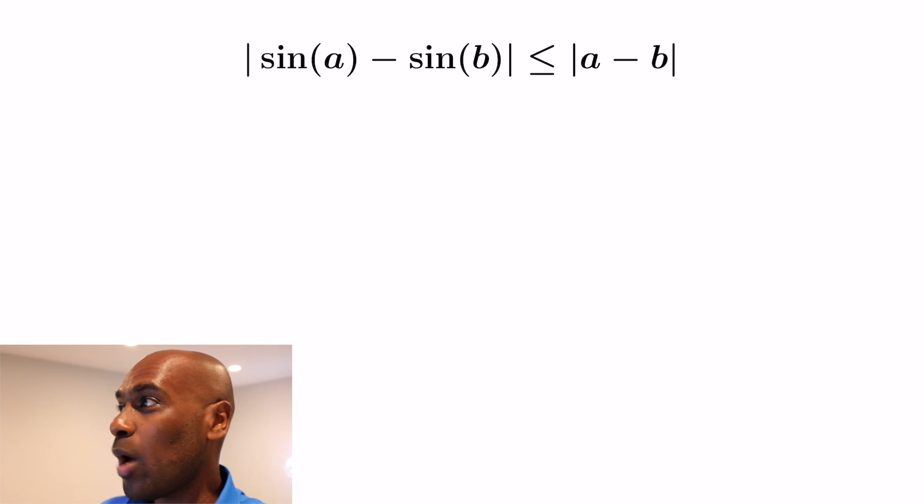So now we're going to see widespread examples and the first one is how the mean value theorem can actually establish inequalities like the following, that |sin(a) - sin(b)| ≤ |a - b|.